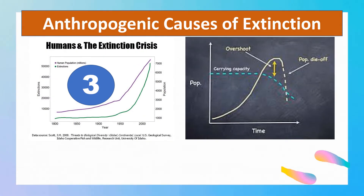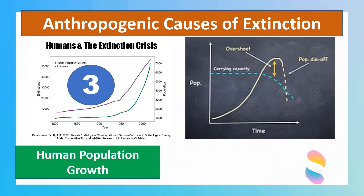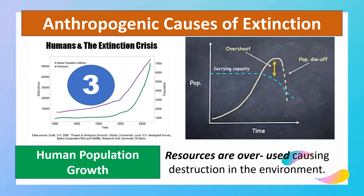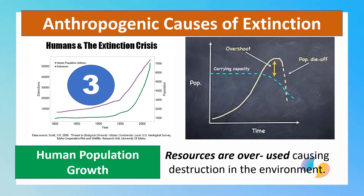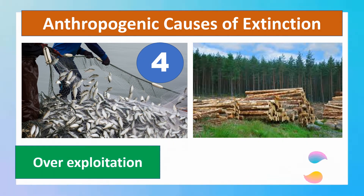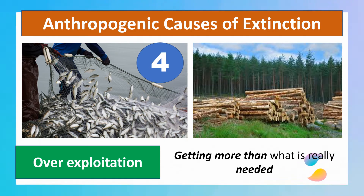The third cause is due to population growth of humans. More humans means greater consumption of different resources, which is why resources are being overused — causing destruction of the environment. Because of that, it results in over-exploitation, wherein many resources are being over-harvested way beyond what is really needed.